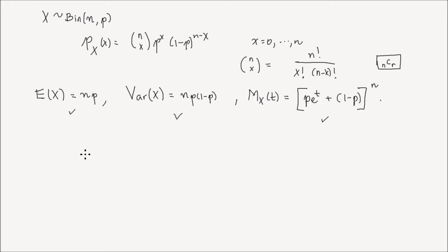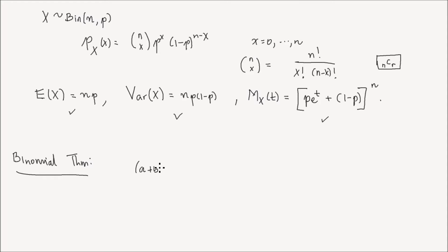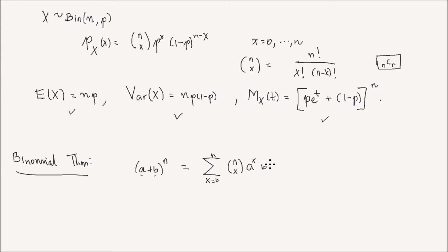To be able to do that, we need to recall the binomial theorem, probably from high school algebra. The binomial theorem gives us a way to express a plus b to the power of n as a sum: x ranging from 0 to n of n choose x times a to the power of x times b to the power of n minus x. That's the binomial theorem.